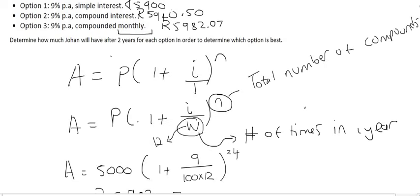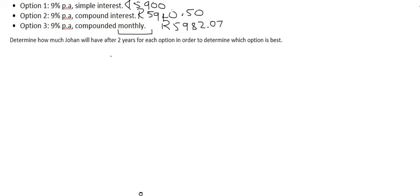He earned slightly more for option three because they are updating his amount more often. For option number two, they're gonna update his amount every year. Let's say he starts investing in 2015, for example. That means that all the way until 2016, they are gonna be basing that nine percent off of his initial amount of five thousand Rand. Only after that first year is complete, then they will upgrade his amount.